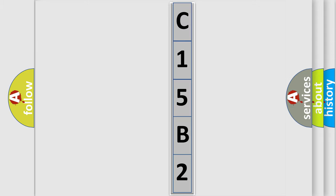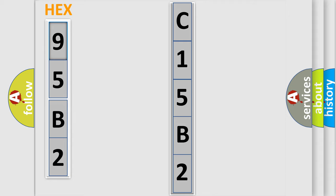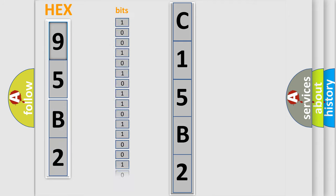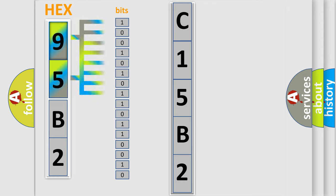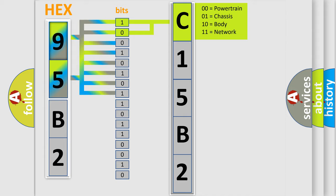The error code is split into two bytes consisting of 16 bits. One bit is the basic unit that each computer works with. The bit has two logical states: zero, low level, and one, high level. By combining the first two bits, the basic character of the error code is expressed.